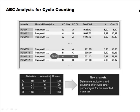In summary, cycle counting uses different counting periods for different items, with more important items counted more frequently, and importance determined by their cumulative contribution to total inventory value. This completes the discussion of inventory and warehouse management.